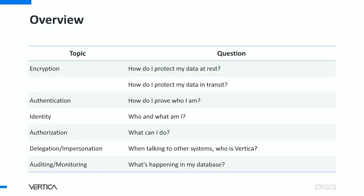We're going to start off by going over encryption — how to secure your data from attackers. Then authentication, which is how to log in. Identity, which is who you are. Authorization, which is now that we know who you are, what can you do? Delegation is about how Vertica talks to other systems. And then auditing and monitoring.